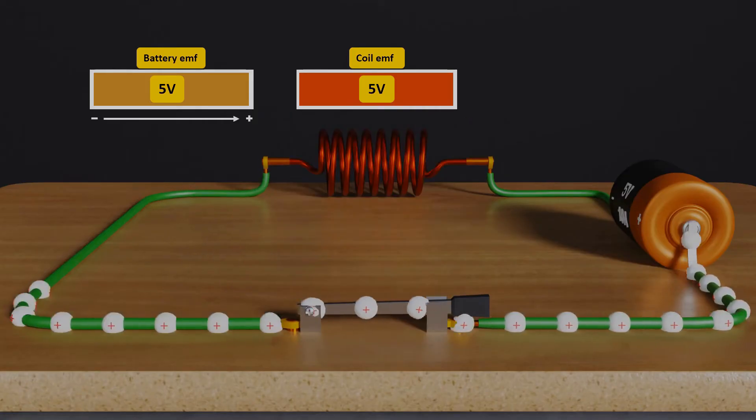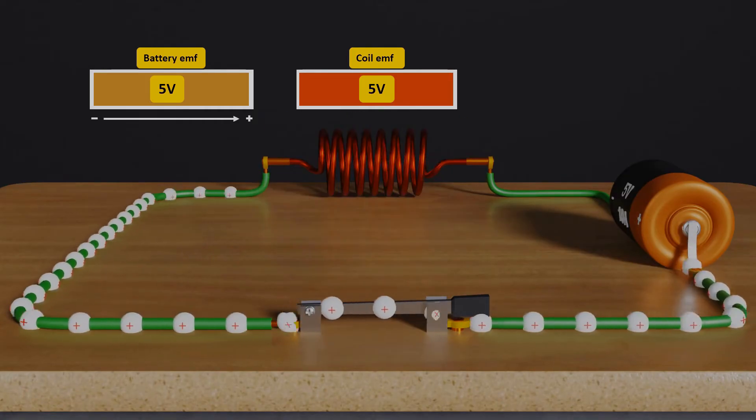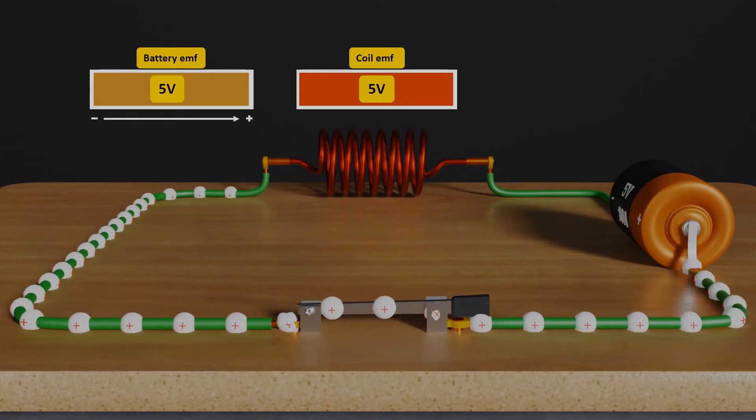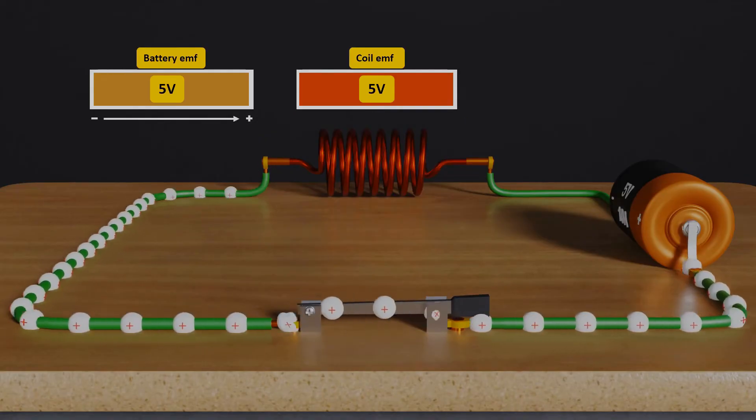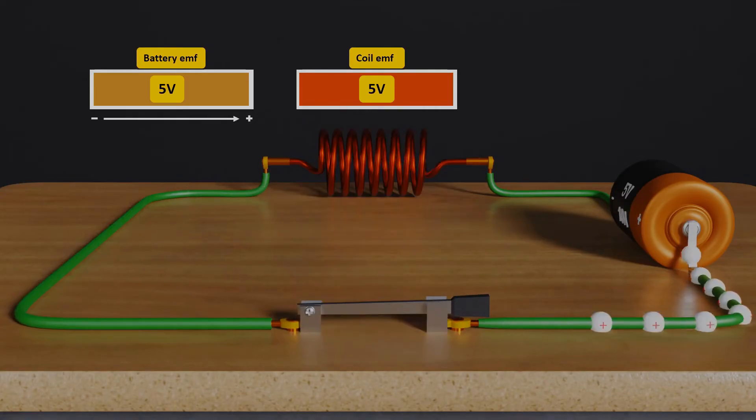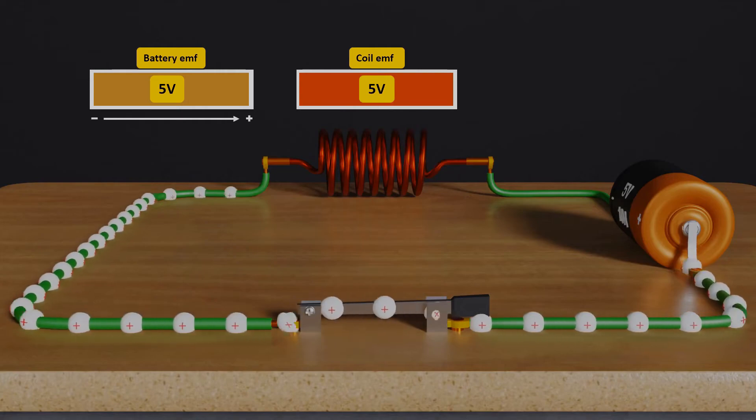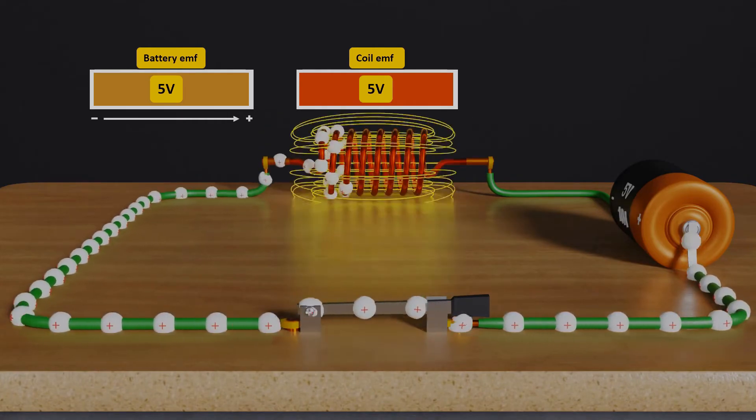Now, according to Lenz's law, we know that direction of induced EMF and current will be in such a way to oppose its cause. In this case, it is an increasing magnetic flux, which occurs when the battery starts flowing current in the coil.